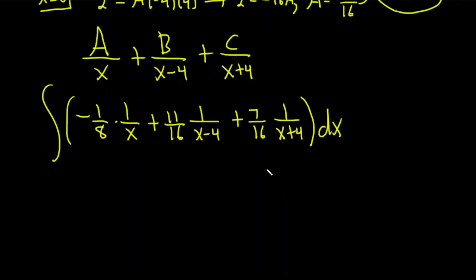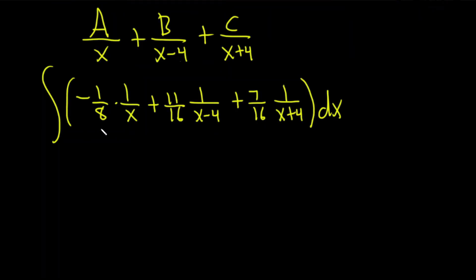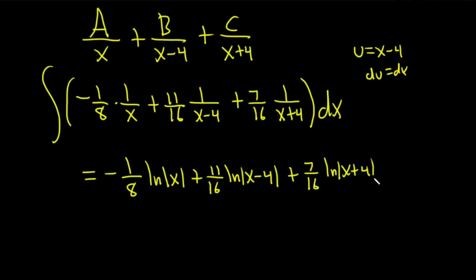And these are easy integrals. They're all going to give you natural logs. Whenever you integrate 1 over x, you get ln absolute value of x. So this is negative 1 eighth ln absolute value of x. Usually the integrals you get are easy. This one here is the same. You can make a u sub if you wanted to. You could let u equal x minus 4. And du is dx. So it's just going to give you plus 11 sixteenths natural log absolute value of x minus 4. Same thing on the last one. 7 sixteenths natural log absolute value of x plus 4.